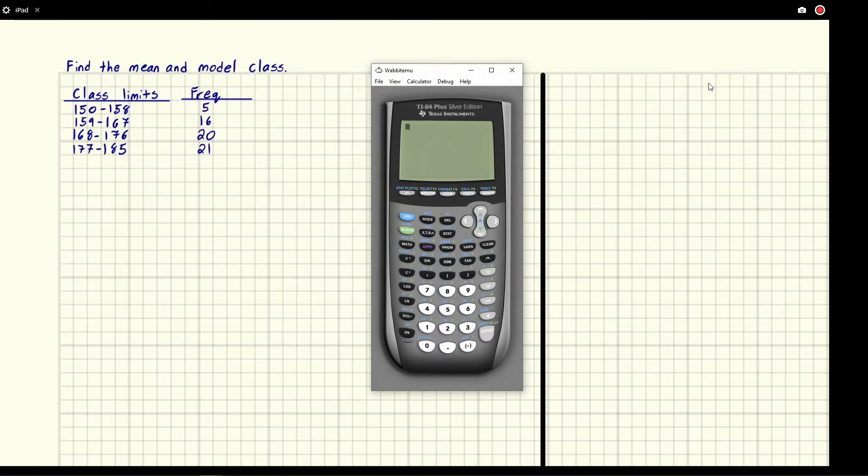Now in a previous video we talk quite at length about the formula that this would produce if we assume that each of these numbers is a midpoint. So the formula we would get is that it's the sum of the midpoints times the frequency divided by the sum of frequency.